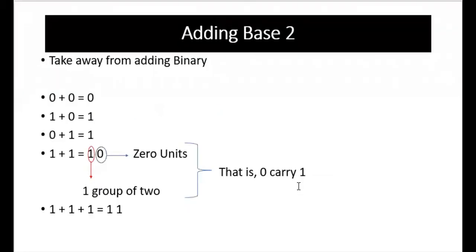To wrap up base 2 addition: 0 plus 0 equals 0; 1 plus 0 equals 1; 0 plus 1 equals 1; 1 plus 1 equals 10 — where the 0 is a zero unit and the 1 represents one group of 2, which is 0 carry 1 as seen in the calculations above. And 1 plus 1 plus 1 equals 11, which is 1 carry 1.